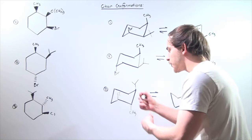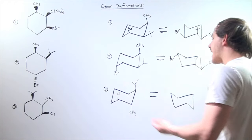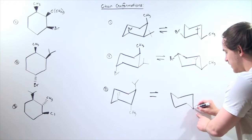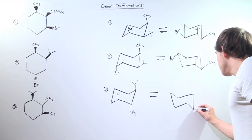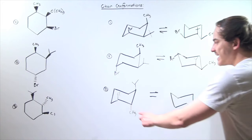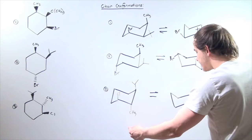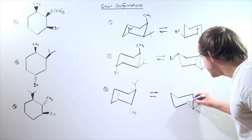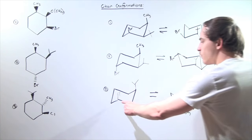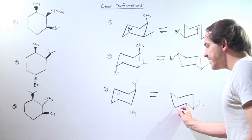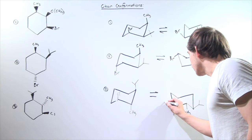Now our interconversion takes place, and all the axial become equatorial and the equatorial become axial. This carbon is now here, and isopropyl goes from axial to equatorial. Next up is this methyl, which is this carbon here — methyl goes from axial to equatorial. Finally, we have our chlorine one carbon over here, going from being axial to being equatorial. Let's finish it off.